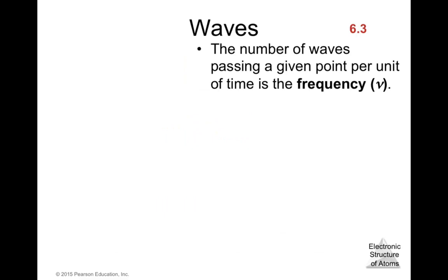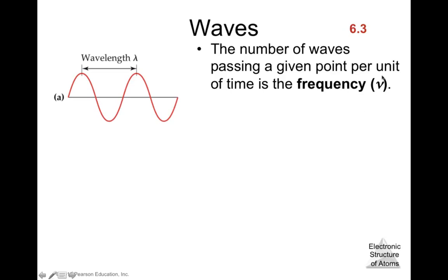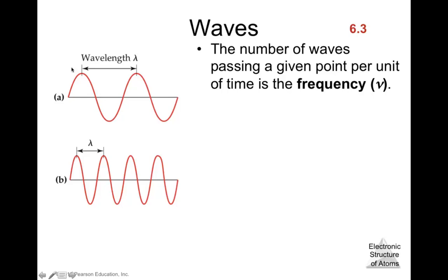The number of waves passing a given point per unit of time is the frequency, represented by the Greek letter nu. We have here two types of waves shown over the same time period. The black line represents time. From this point to this point is one cycle. We can see that we can complete one and two cycles with the first wavelength.